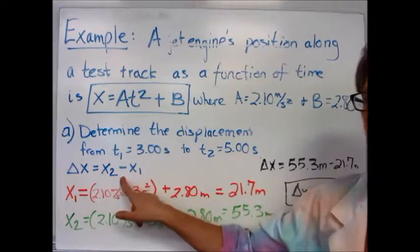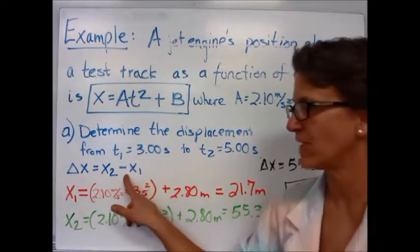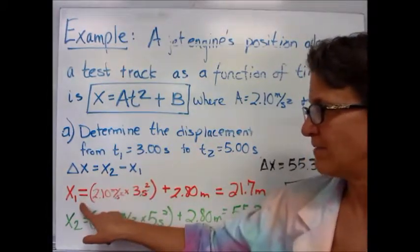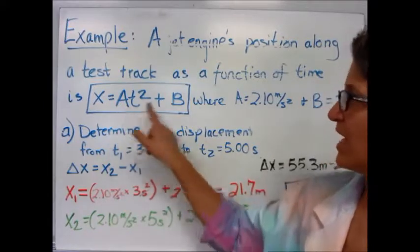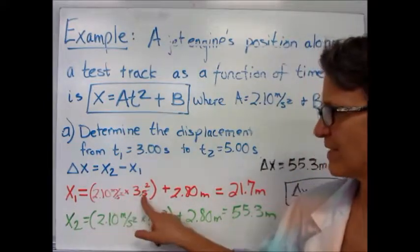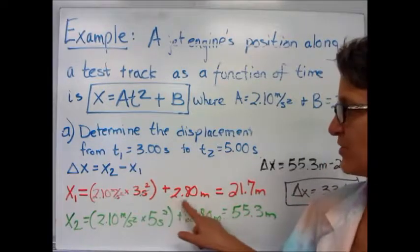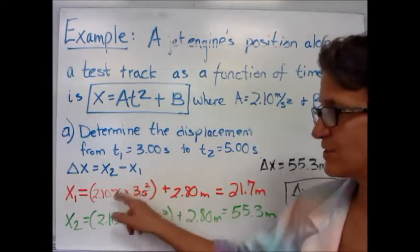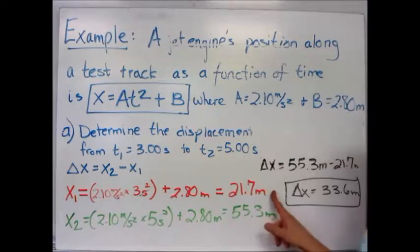Displacement is your change of position, x₂ minus x₁. To find x₁, you just plug in our a and our b and the time variable. So 2.1 times 3 squared plus 2.8. Your units do cancel, gives you 21.7 meters.